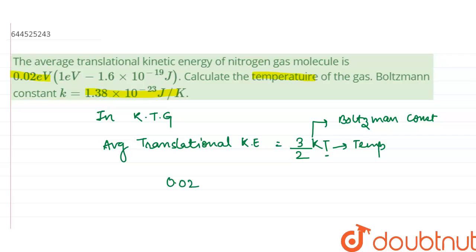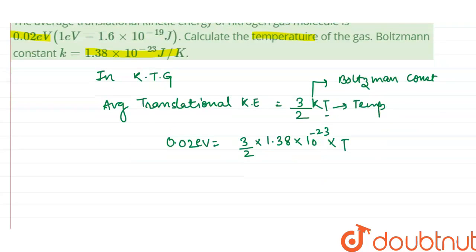0.02 electron volt equals 3/2, the value of k is 1.38 × 10^-23 joule per kelvin × T. Now we find out the value of T.